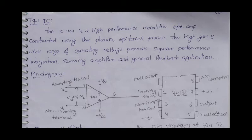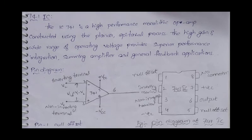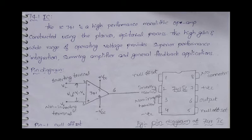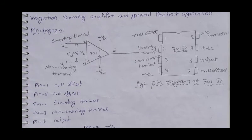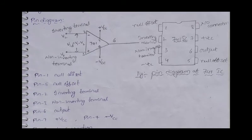The IC 741 is very important because in our subject linear IC applications, it is a foundational component. The IC 741 is a high performance monolithic op-amp constructed using the planar epitaxial process. The high gain and wide range of operating voltage provides superior performance in integration, summing amplifier, and general feedback applications.